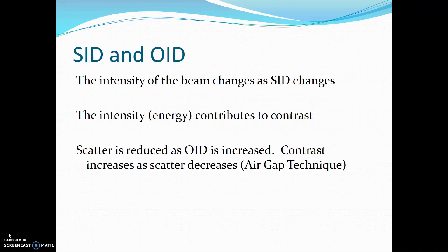The intensity of the beam changes as SID changes, and the intensity or energy contributes to contrast. Scatter is reduced as OID is increased, and contrast increases as scatter decreases. This is the concept behind the air gap technique.